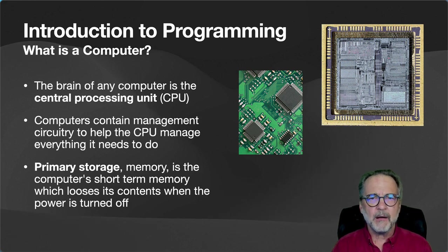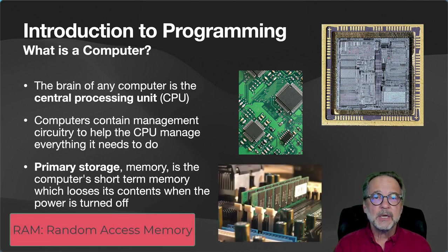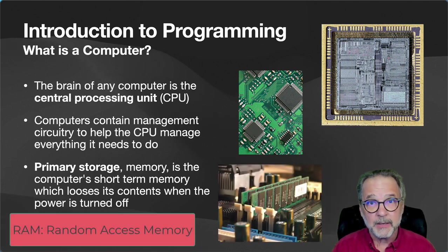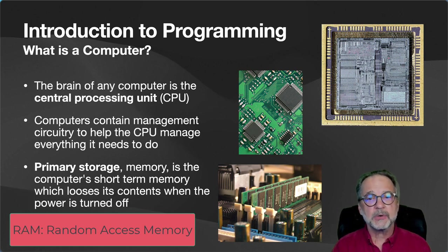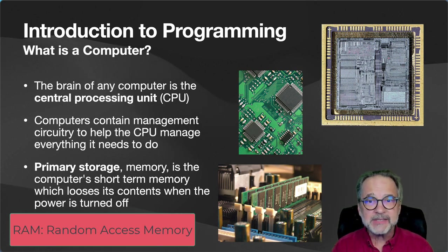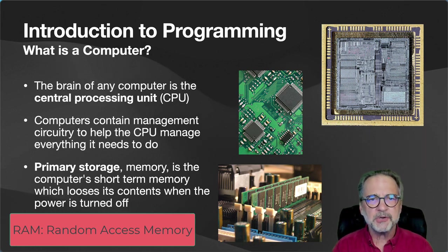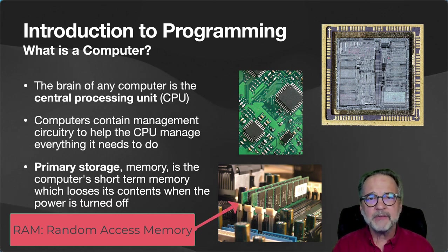The CPU also needs to manage one of its best friends: primary storage, or memory, also called RAM — random access memory. That is really the short-term memory, which can lose all of its contents when the power is turned off. So you've got memory chips, and when the power is turned off, all of that information in those chips is lost.